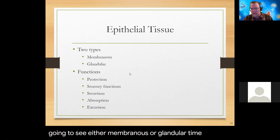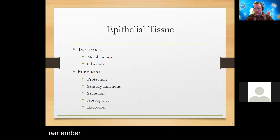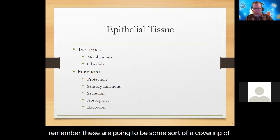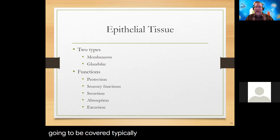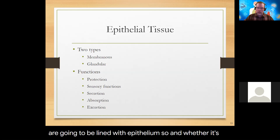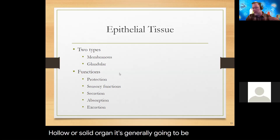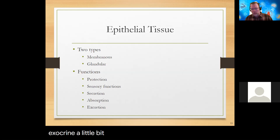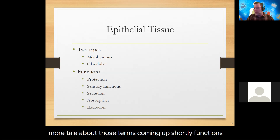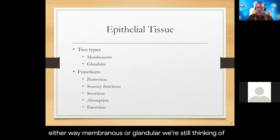With epithelial tissue, we're going to see either membranous or glandular types. We're primarily going to focus on membranous — these are going to be some sort of covering of a body cavity or hollow organ. Solid organs are covered with epithelium; hollow organs are lined with epithelium. Whether hollow or solid, it's generally going to be membranous. We do have some glandular aspects throughout the body as well — and we've seen endocrine and exocrine a little already.